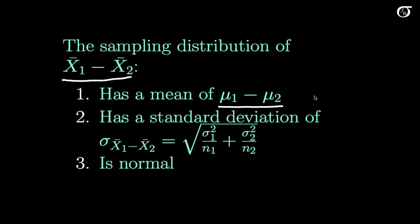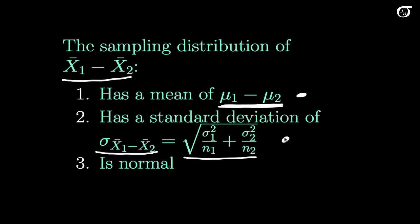So x̄1 minus x̄2 is an unbiased estimator of μ1 minus μ2, and that's true regardless of independence or normality — we don't need those for this part. However, for the standard deviation of the sampling distribution of the difference in sample means, we do need independence for that to be true. And if we also have normality, then the sampling distribution is normal.